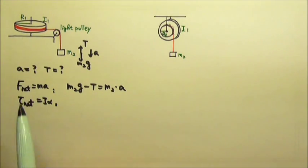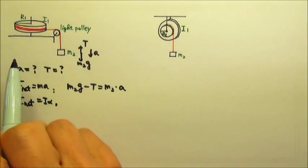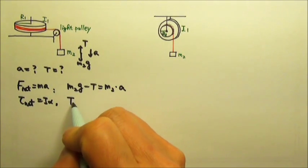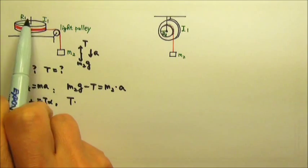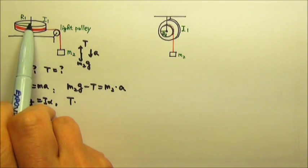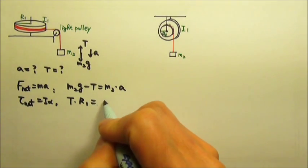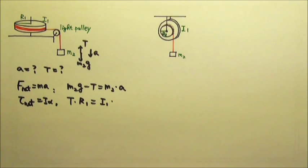For this disk, we have to write net torque equals I alpha. The net torque acting on it is produced by the tension in the string. So the net torque is the tension times the lever arm. Since the string wraps around this part that has a radius R1, the lever arm is R1. This equals I1 times alpha.